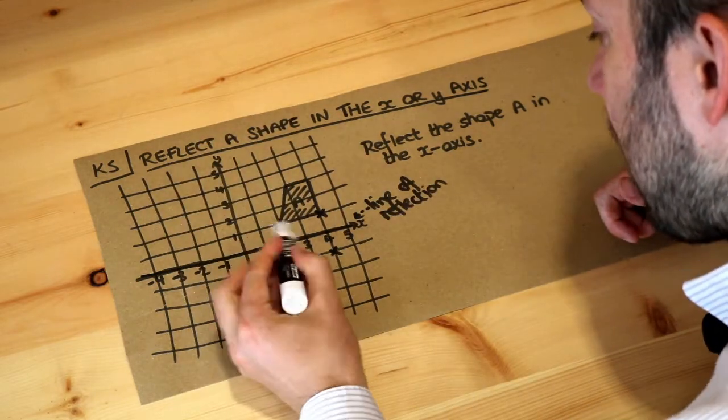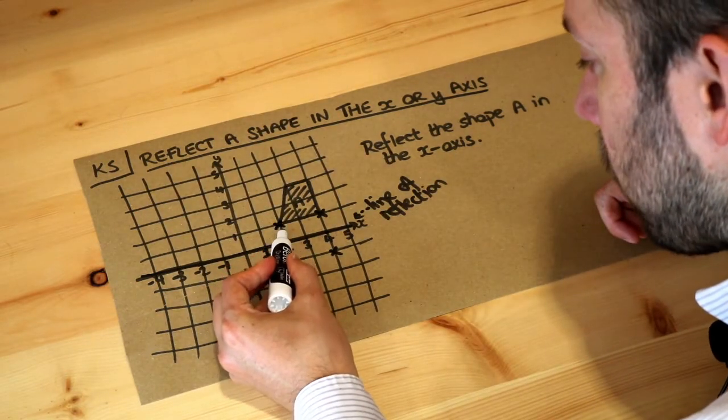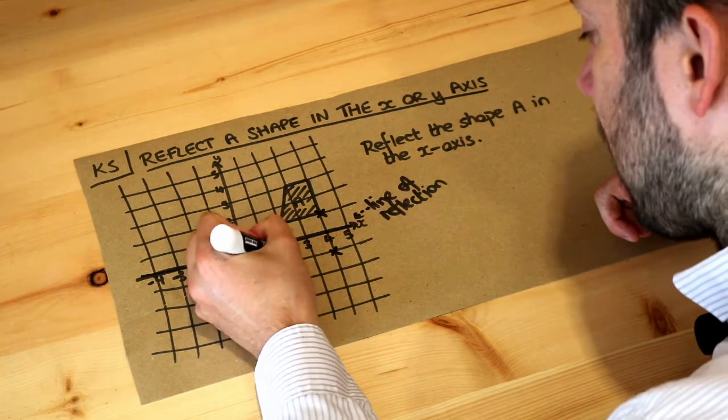What about the next one if we do this again? If we go directly towards the line of reflection that's one square. Do one square again we get this.